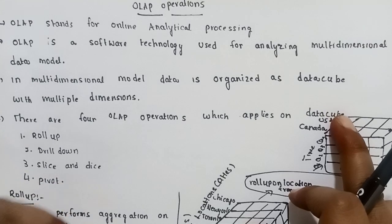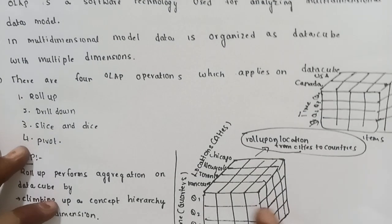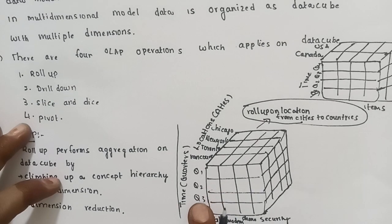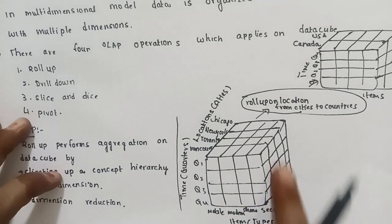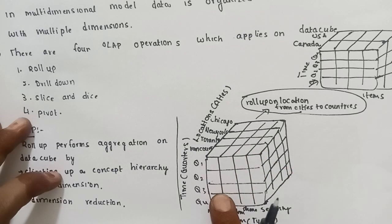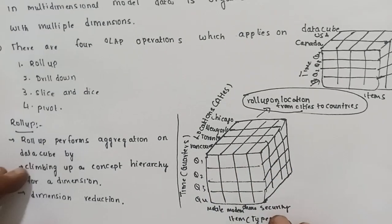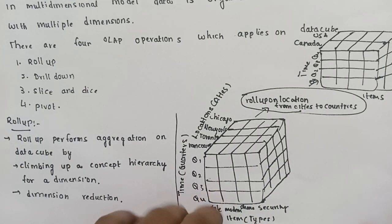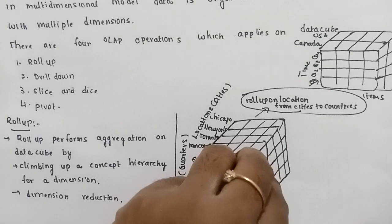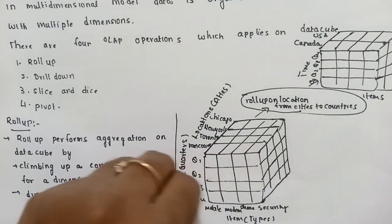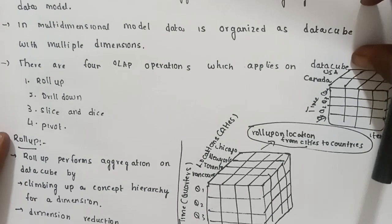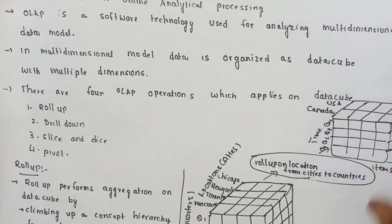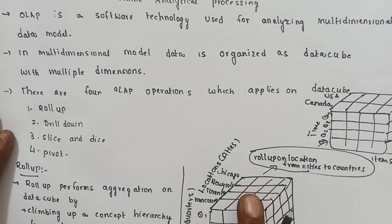More than one dimension is used — this is a multidimensional data model. For example, the dimensions in this data model are Time, Locations, and Items — three dimensions, which is more than one. So OLAP is a software which is used for analyzing multidimensional data.